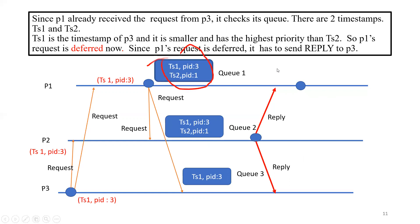Since P1 already received a request from P3, it checks its own queue. In the queue there are two timestamps, TS1 and TS2. Taking timestamp value TS1 — it is the timestamp of process P3 — it is smaller and thus has higher priority than TS2. So P1's request is deferred, meaning postponed, and since its request is deferred, it sends a reply to P3.